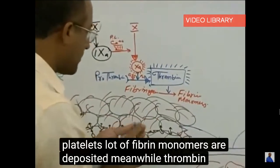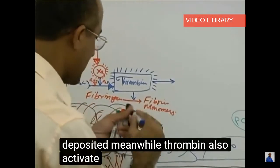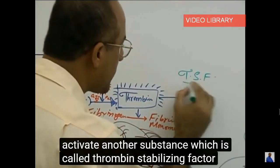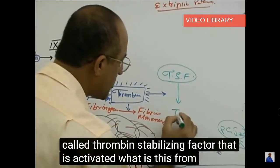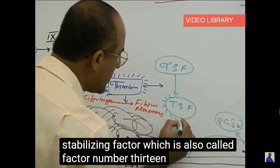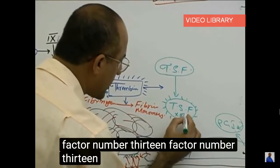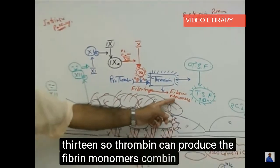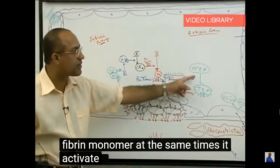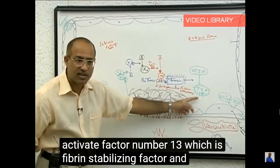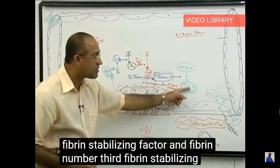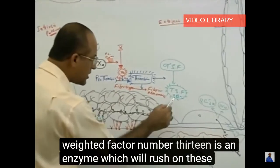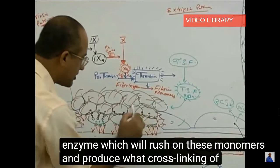Meanwhile, thrombin also activates another substance which is called fibrin stabilizing factor, that is factor number 13. So thrombin can produce the fibrin monomers, at the same time it activates factor number 13, which is fibrin stabilizing factor. Activated factor number 13 is an enzyme which will rush on these monomers and produce cross-linking of these monomers.